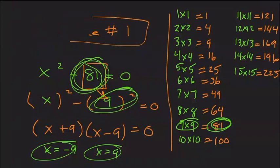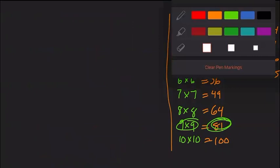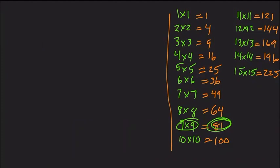Now we'll move on to solving quadratic equations using the factoring out of GCF method. For example, if we have 2x squared plus 6x equals 0 — we still have a quadratic with an x squared term — we ask: what's the biggest factor we can take out from both 2x squared and 6x?